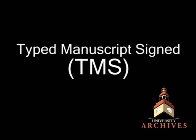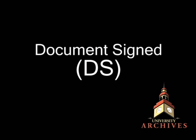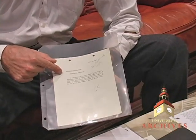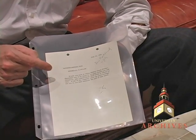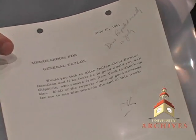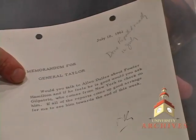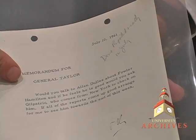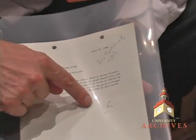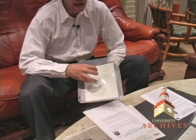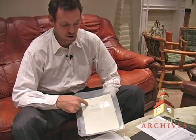Here's a John F. Kennedy typed manuscript signed. This can also be referred to as a TMS, or a DS — document signed. What makes this not a letter, and what differentiates this from the Jackie Kennedy letter, is it doesn't have a 'Dear General Taylor' — it's 'Memorandum for General Taylor.' And it doesn't have a 'yours truly.' It's a document, not a letter. So it's a typed manuscript signed, or document signed — TMS or DS.